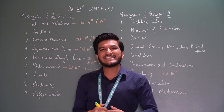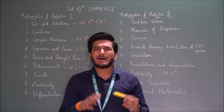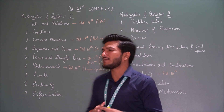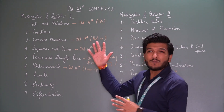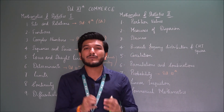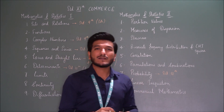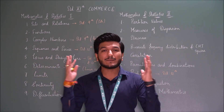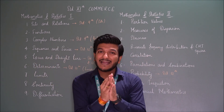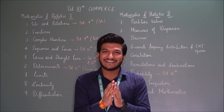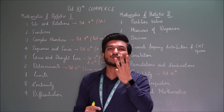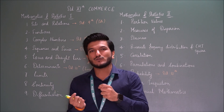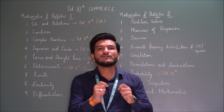Roughly speaking, for your 12th board commerce maths exam: Maths 1 will have a written paper of 40 marks, Maths 2 will also have a written paper of 40 marks, so Maths 1 and Maths 2 combined is 80 marks. This paper is 3 hours long, so in 3 hours you have to attempt Maths 1 and Maths 2 together for a total of 80 marks.